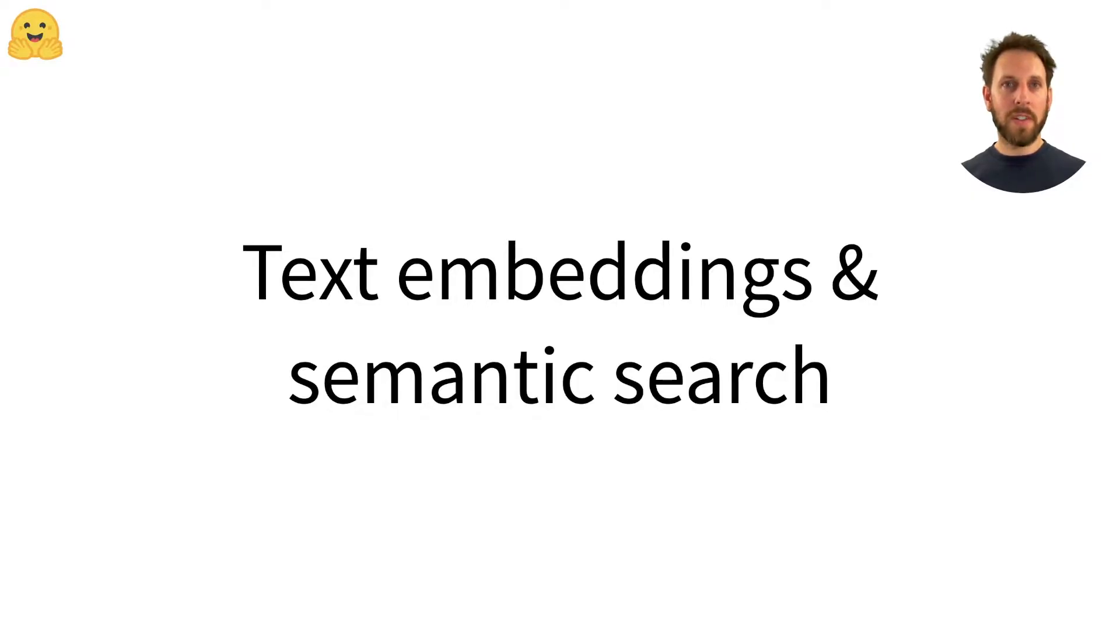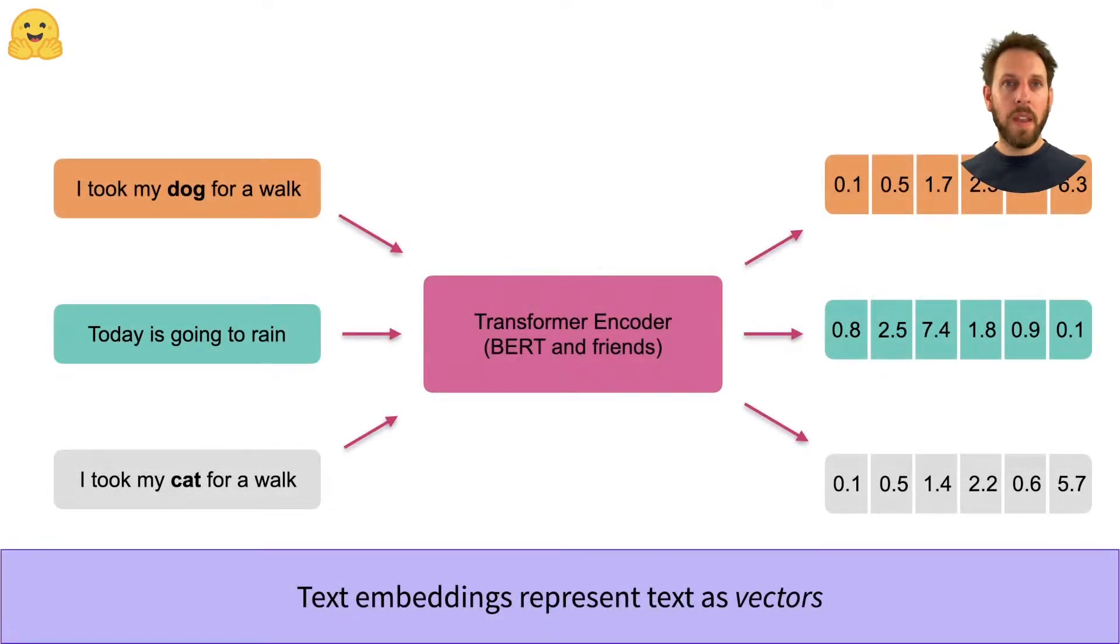Text Embeddings and Semantic Search. In this video, we'll explore how Transformer models represent text as embedding vectors and how these vectors can be used to find similar documents in a corpus. Text embeddings are just a fancy way of saying that we can represent text as an array of numbers called a vector.